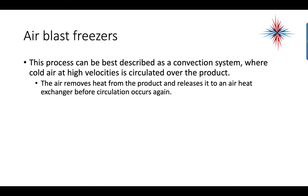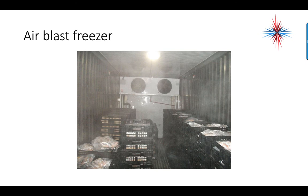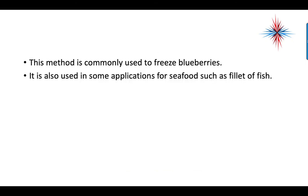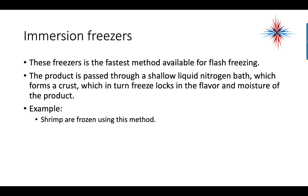Air blast freezers are best described as a convection system where cold air at high velocities is circulated over a product. The air removes heat from the product and releases it to an air heat exchanger before circulating again. This method is commonly used to freeze blueberries and in some seafood applications such as Filet-O-Fish. Immersion freezers are the fastest method available for flash freezing — the product is passed through a shallow liquid nitrogen bath, which forms a crust that freeze-locks in the flavor and moisture. Shrimp is an example of food frozen using this method.